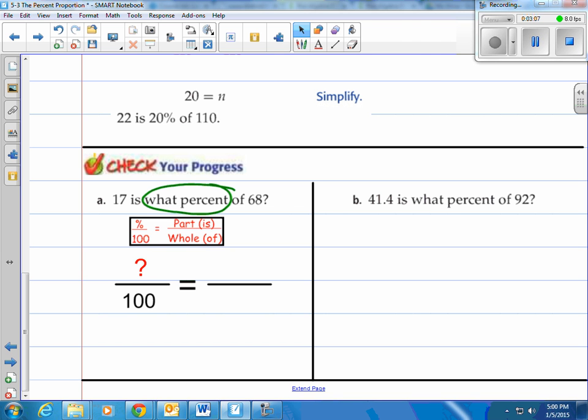17 is, if you look at 17 is, that's our is number, is goes on top, that's the part, and our of number right here is 68. So 68 would be on the bottom. Then of course we cross-multiply divide by 68, we have 100 times 17 divided by 68, that's 25. So what we would say is 17 is 25 percent of 68.